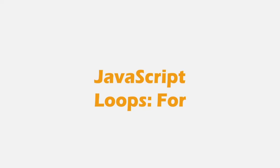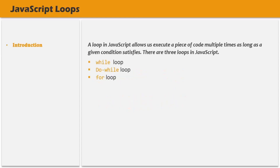In the last two lectures, we learned about while loop and do while loop. Now in this lecture, we are going to talk about for loop. We have learned that in JavaScript we have three loops: while loop, do while loop, and for loop. We have already talked about while loop and do while loop in our previous lectures. Let's understand for loop in this lecture.